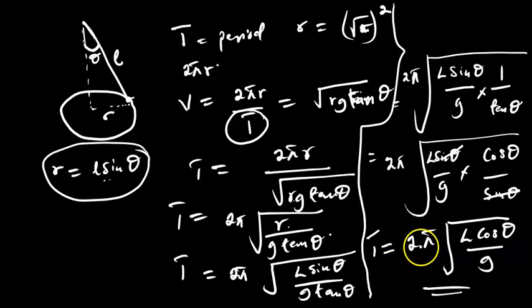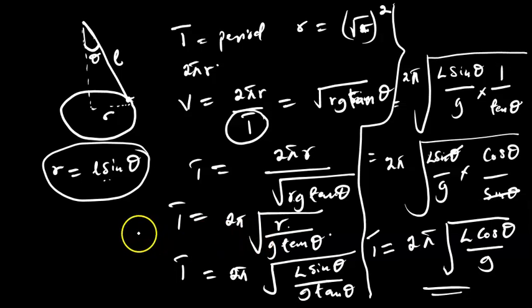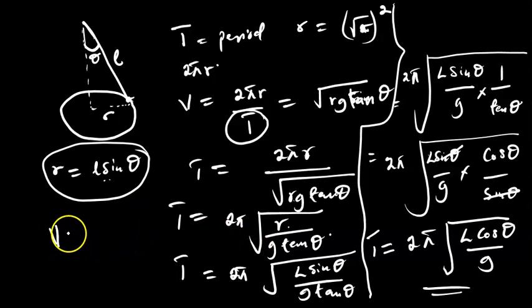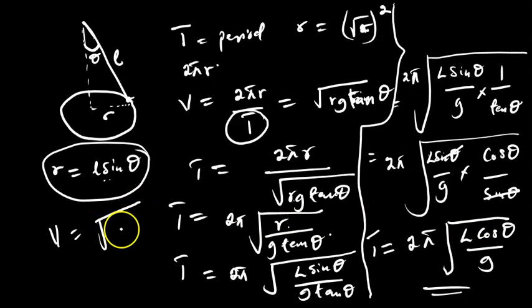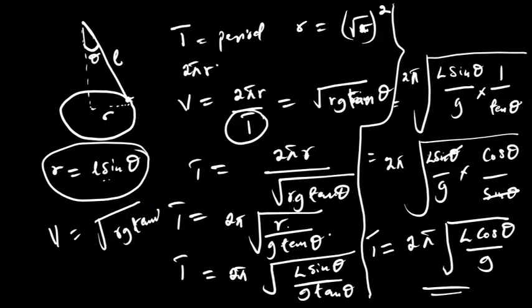So the period of the conical pendulum is T = 2π√(l cosθ / g), while the velocity can be calculated from v = √(rg tanθ).